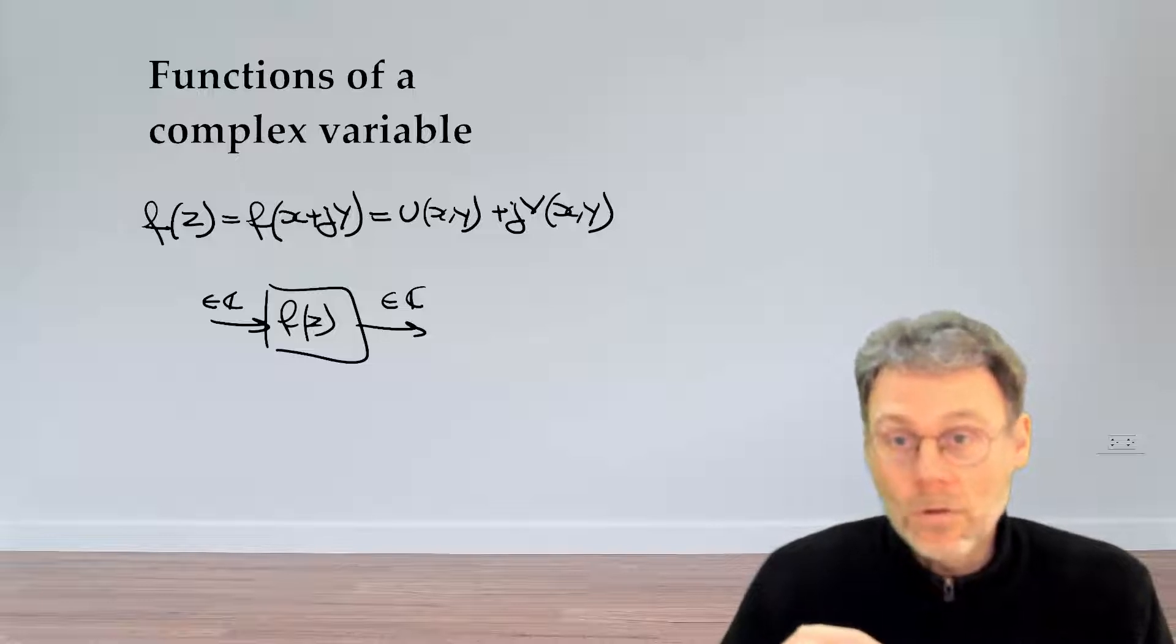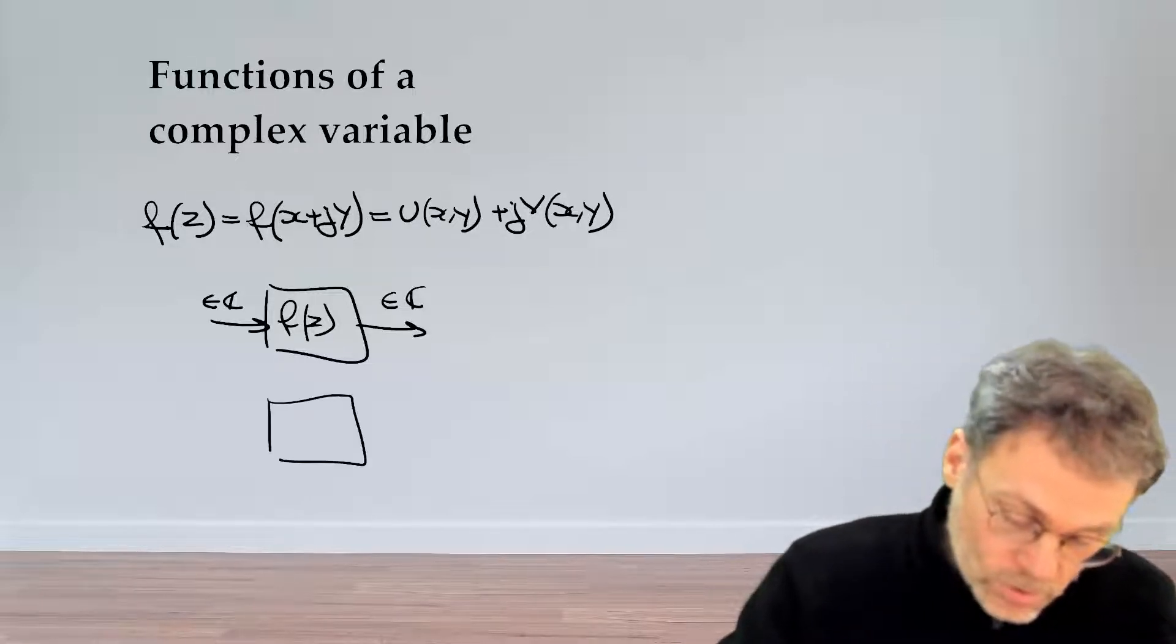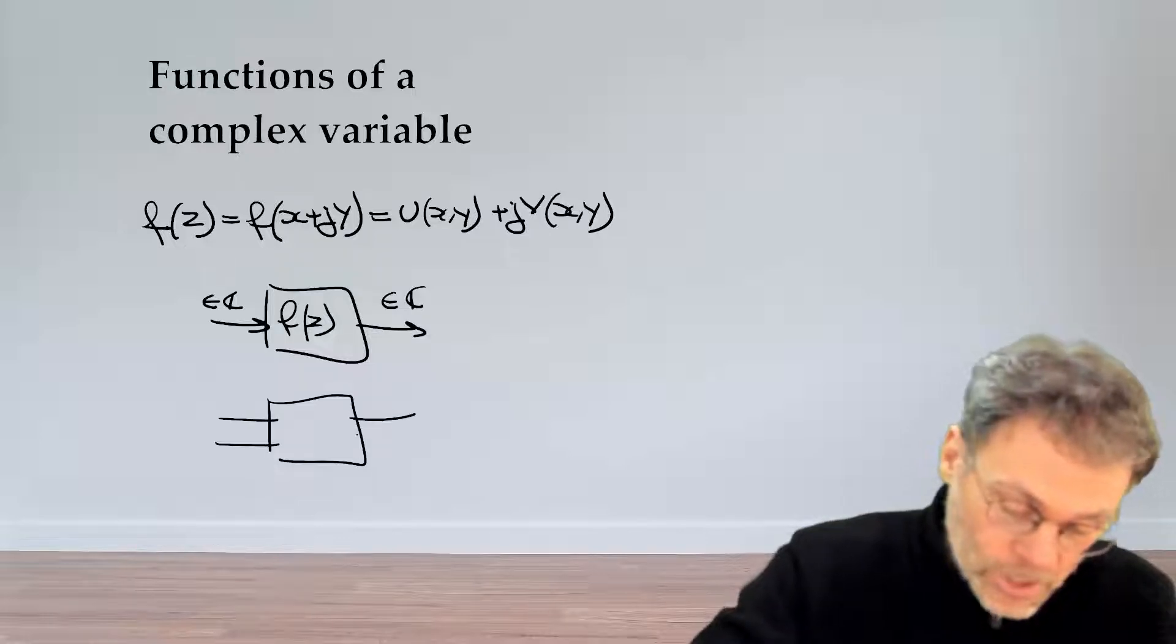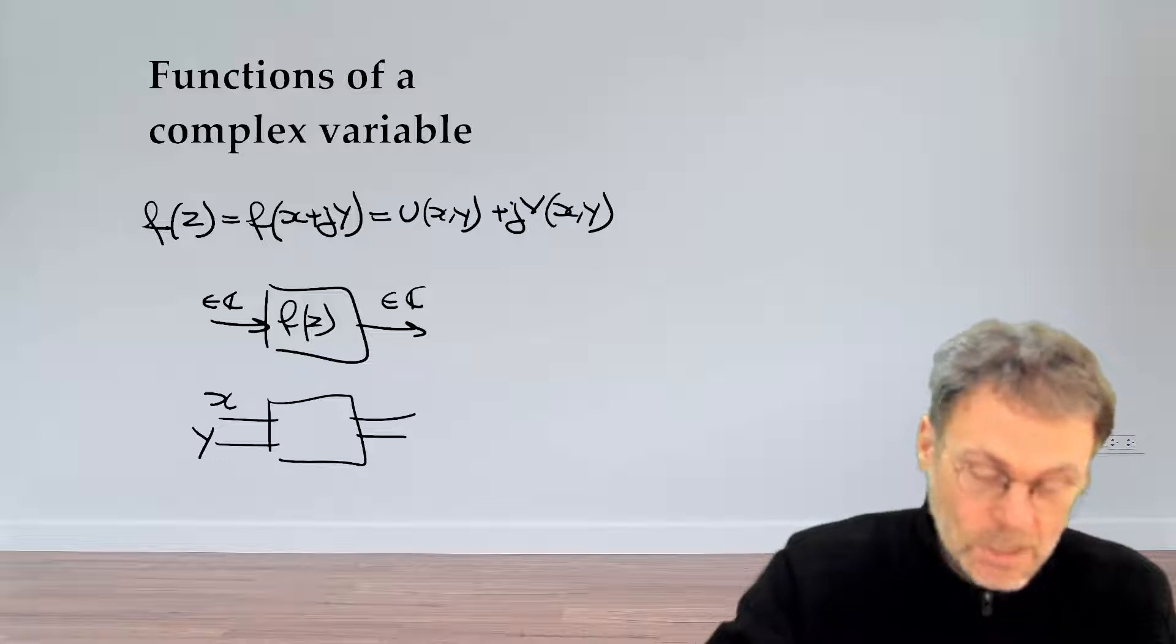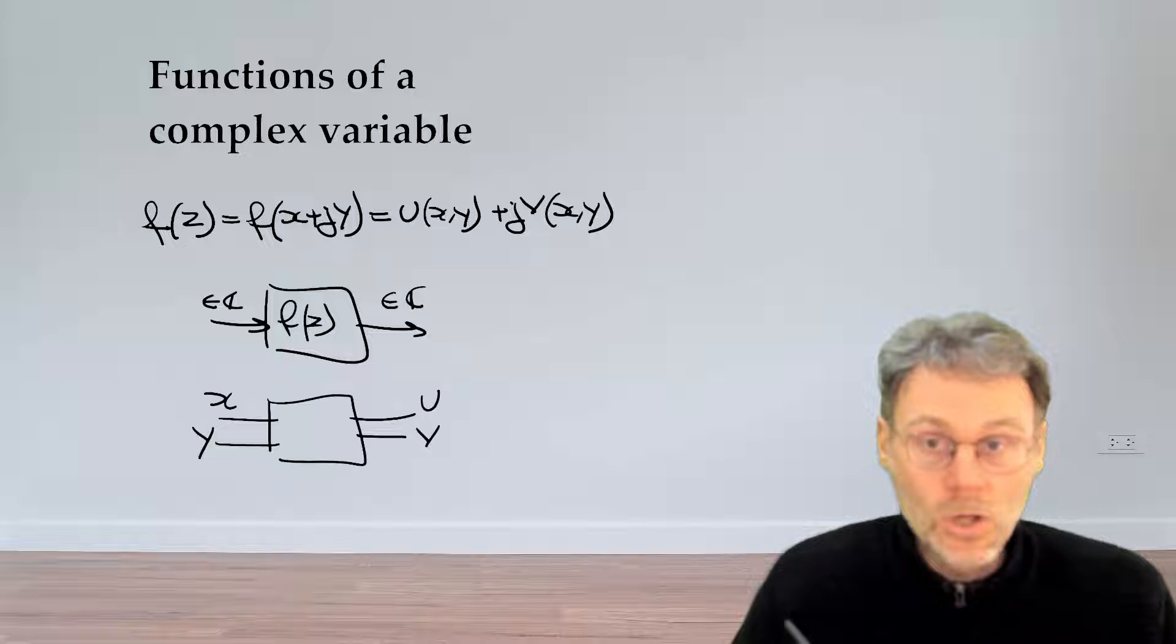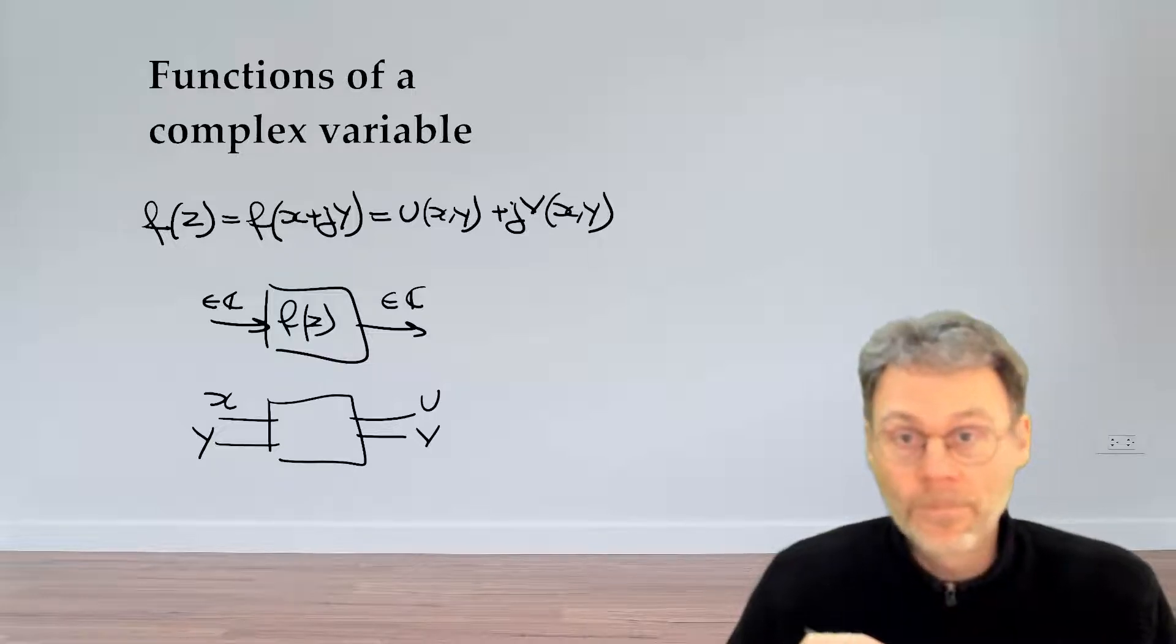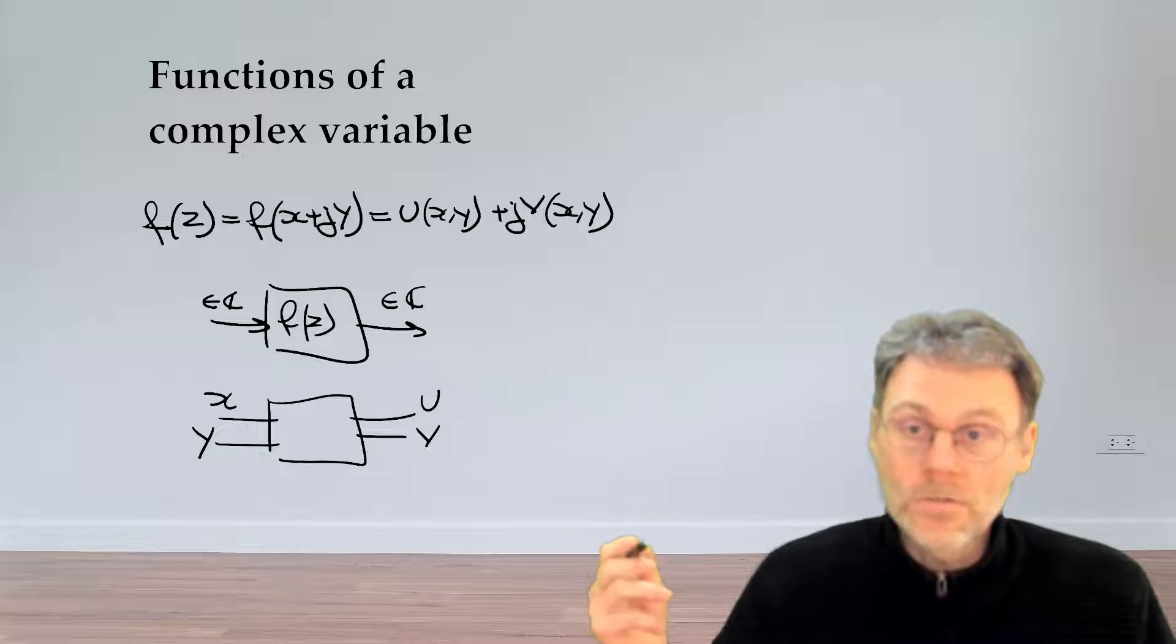So basically a complex valued function f of z is a shortcut or a different way of writing an object that takes two real valued inputs x and y and then spits out two real valued outputs u and v. So this is a definition which makes a lot of sense, it's very intuitive.